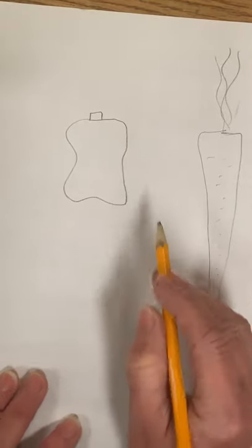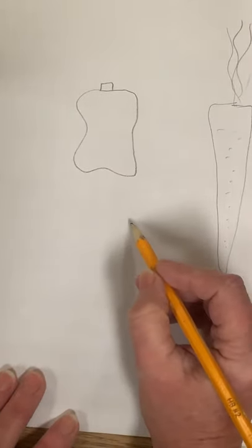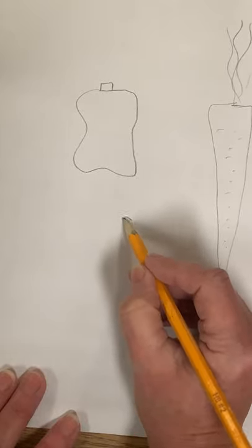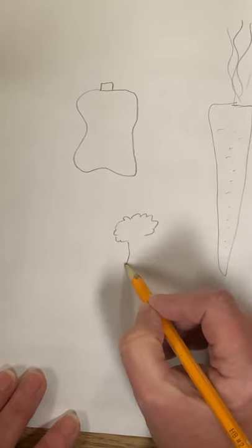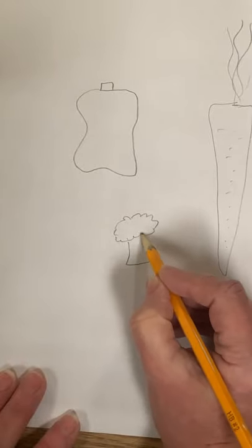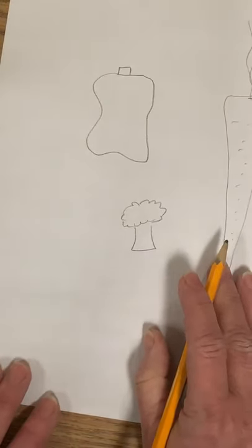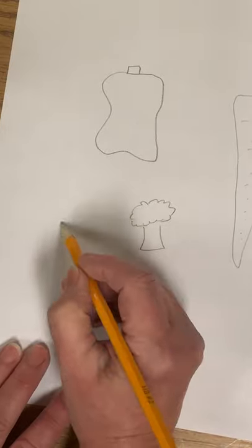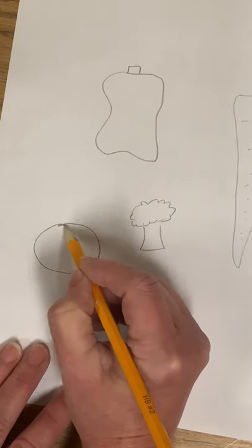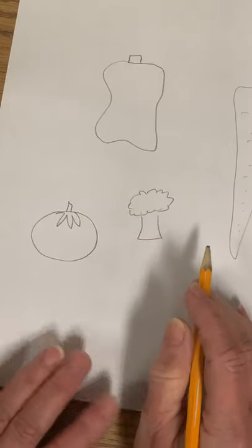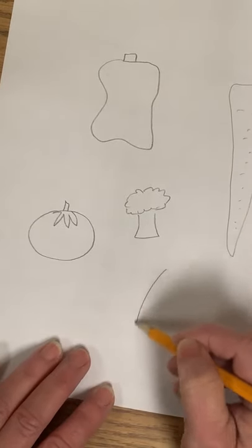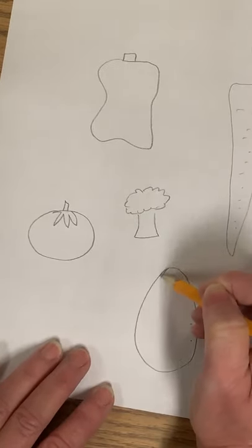Another one you could do is part of a vegetable that looks like a little tree—that would be some broccoli. Another one that's good to do is a tomato, and tomatoes come in green, yellow, and red, so you have to choose.